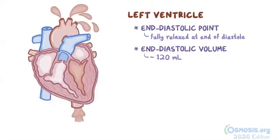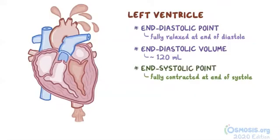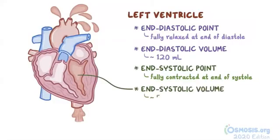Then the left ventricle contracts, forcing blood through the aorta and into the whole arterial system. After that is another moment when the left ventricle is fully contracted. It occurs at the end of contraction, or systole, also called the end systolic point. The volume of blood within the left ventricle at this point is called the end systolic volume, and it's about 50 milliliters.